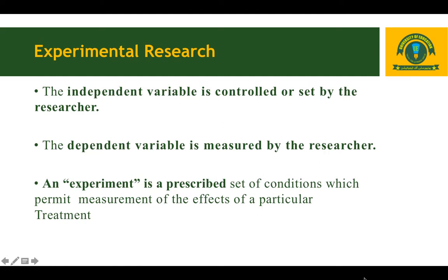The independent variable is controlled or set by the researcher, and the dependent variable is measured by the researcher. The researcher's aim is to control the independent variable and measure the dependent variable. An experiment is a prescribed set of conditions which permits measurement of the effects of a particular treatment.